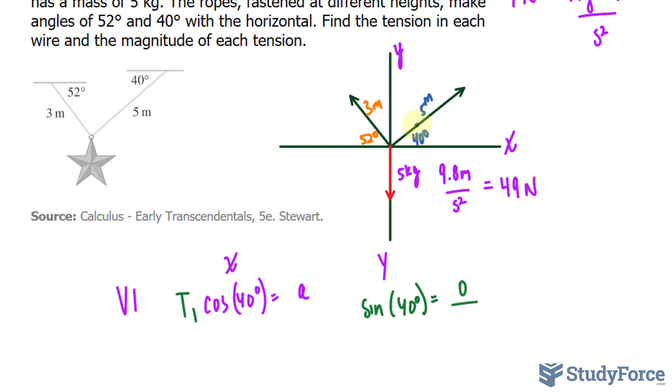Sine at 40 degrees is equal to opposite over hypotenuse. Opposite is what we're looking for. Let's call it O, over, once again, the hypotenuse is unknown, T sub 1. Multiplying both sides by T sub 1, we end up with the following expression.